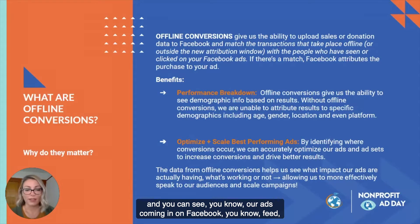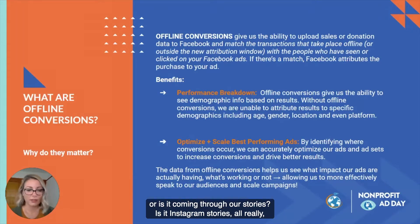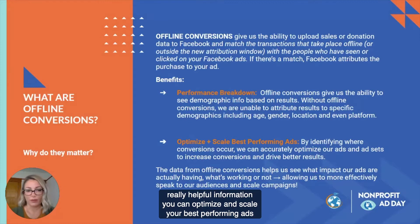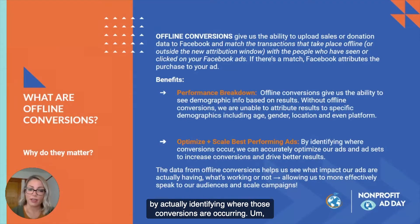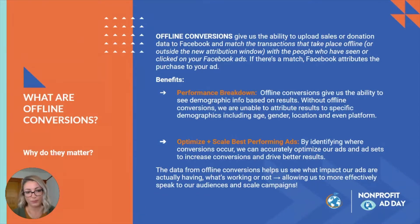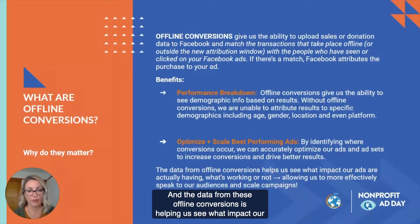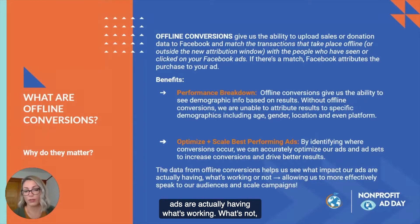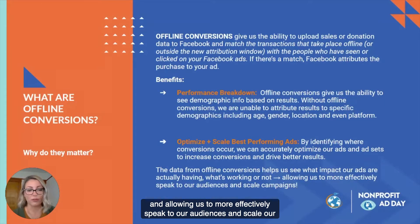You can see whether your ads are coming in on Facebook feed or through stories, Instagram stories — all really helpful information. You can optimize and scale your best performing ads by identifying where those conversions are occurring, accurately optimize your ads and ad sets to increase conversions and drive better results. The data from offline conversions helps us see what impact our ads are actually having, what's working and what's not, allowing us to more effectively speak to our audiences and scale our campaigns.